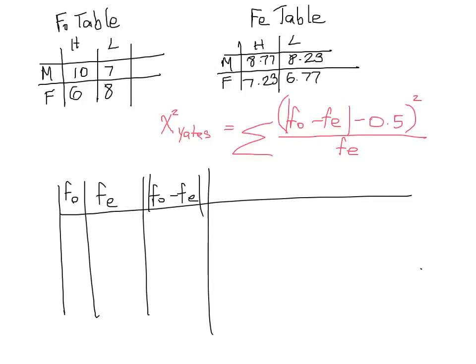Once we've done that for each set of numbers, we can then subtract 0.5. So all I'm doing right now is looking at our formula and following each of the steps. So we subtract our 0.5 and then we can square the result of that.